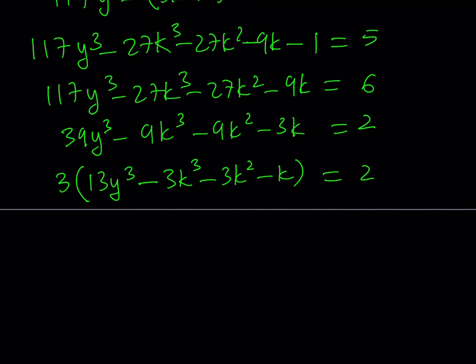Now, we get a contradiction here. Why? Because, on the left-hand side, we have a multiple of 3. But, on the right-hand side, we get 2, which is not a multiple of 3. So, this equation is impossible if y and k are integers.